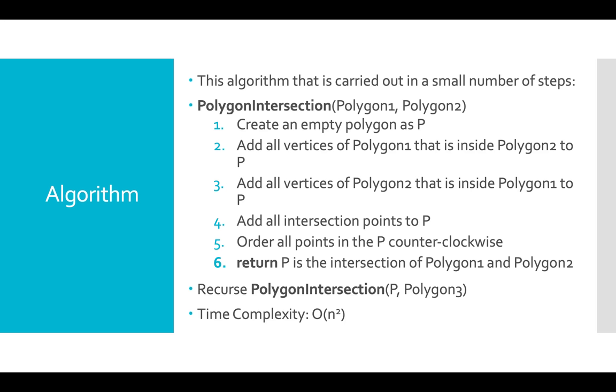In order to find the intersection points, I can use the algorithm that we implemented in an earlier project, where we find the intersection between the edges of the polygons. And the next step, we order all points in the P counterclockwise. And this function returns P, which is the intersection of polygon 1 and polygon 2.